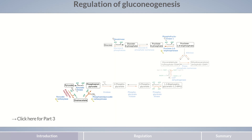Suitable starting points for regulation are enzymes that are specific to either glycolysis or gluconeogenesis — that is, the respective key enzymes. Here we'll discuss the most important regulatory mechanisms of gluconeogenesis. The first opportunity for specific regulation arises in the first reaction step of gluconeogenesis. The responsible enzyme, pyruvate carboxylase, is inhibited by ADP in case of energy deficiency. If there's not enough energy available in the cell, glucosynthesis, which is energetically demanding, wouldn't be physiologically reasonable.